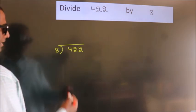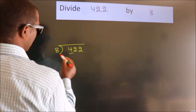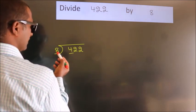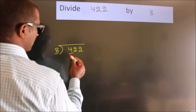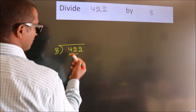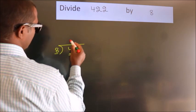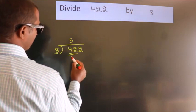Next, here we have 4, here 8. 4 is smaller than 8, so we should take 2 numbers, 42. A number close to 42 in the 8 table is 8 fives, 40.